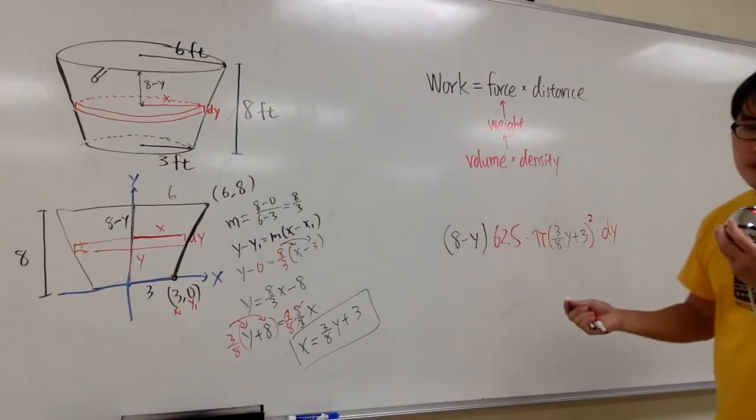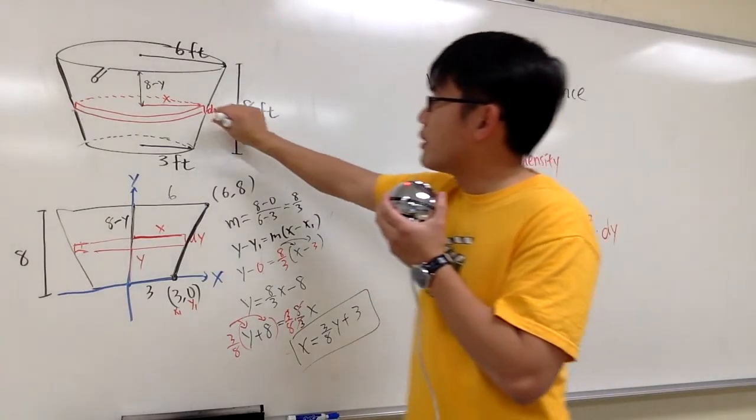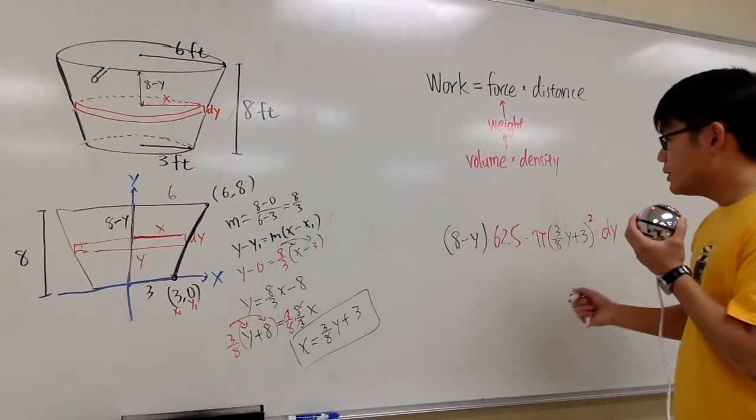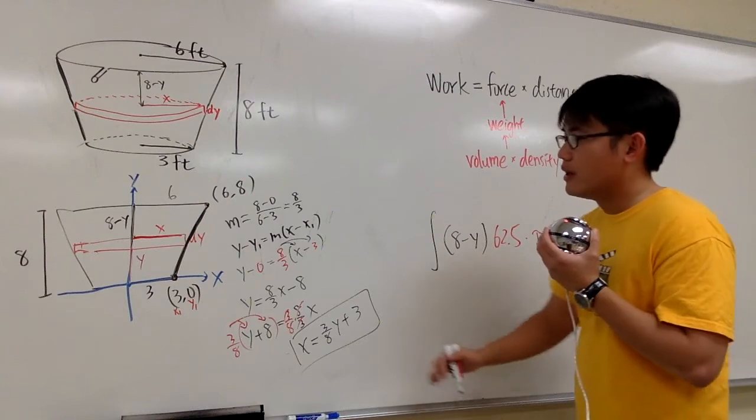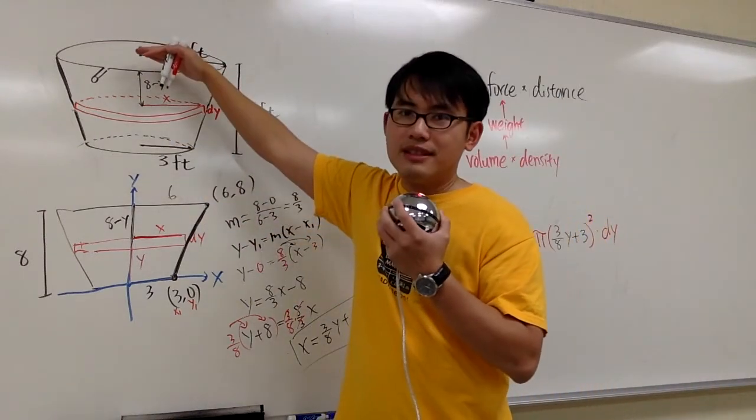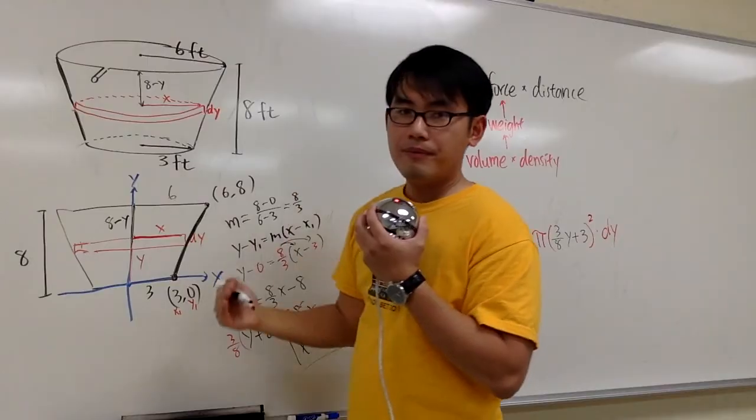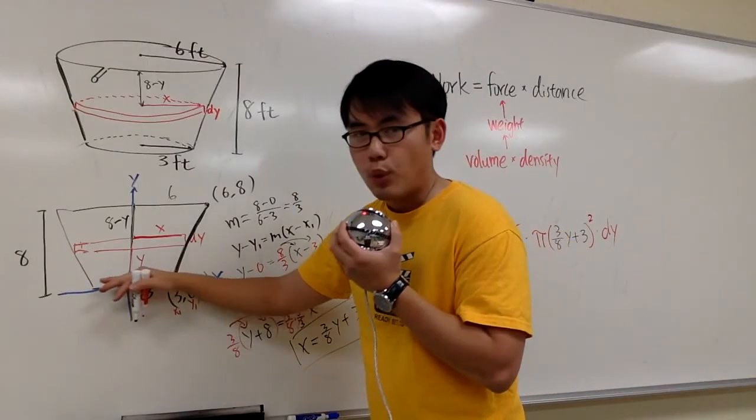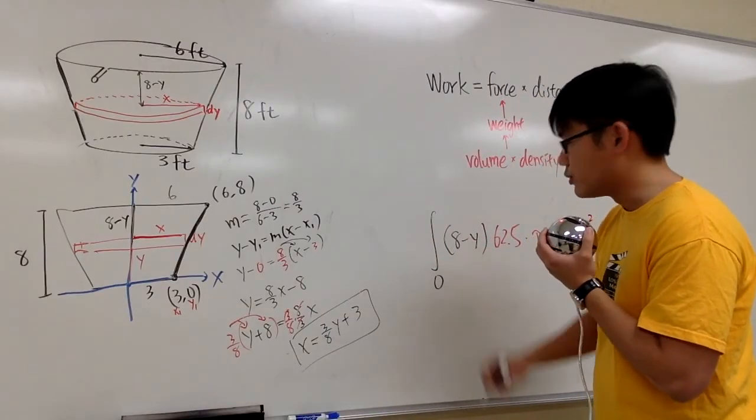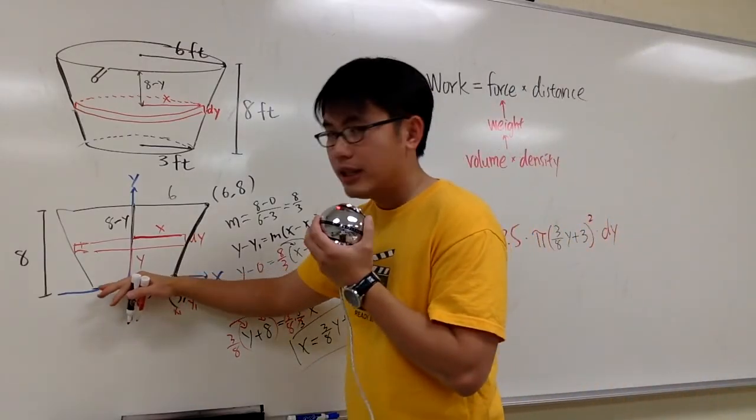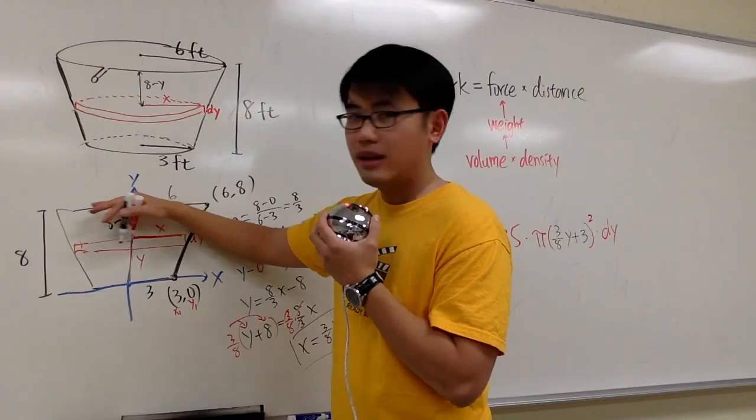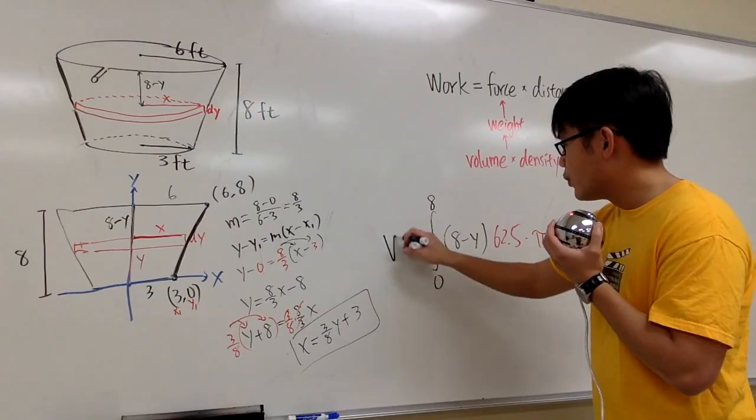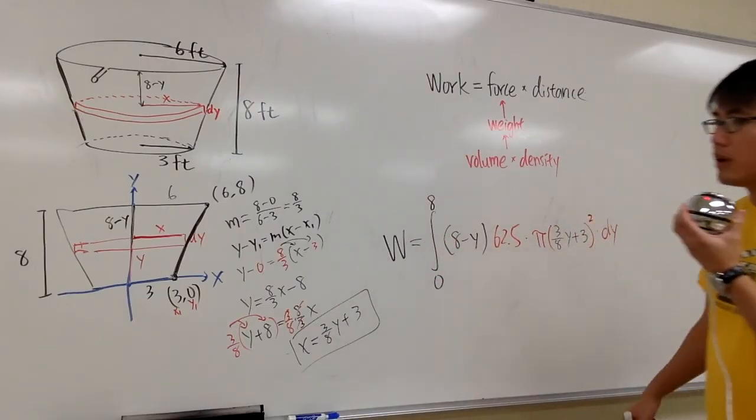Therefore we multiply by 8 minus y for the distance. This represents the work that we need to pump out this disk of water out of the tank. And what we do is we are going to integrate all these possible disks from all the way down here up here. The very first disk will be at y equals 0, so integrate from y equals 0. And the very last disk will be right here on top of it, which is y equals 8. And this will calculate the work for you.